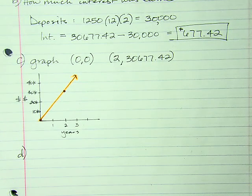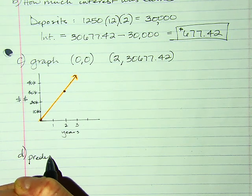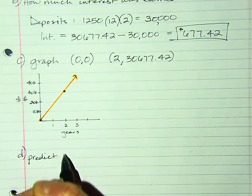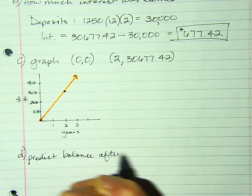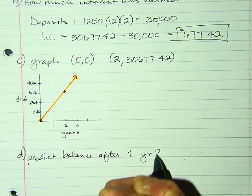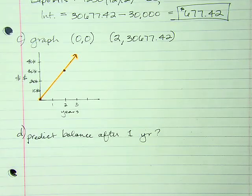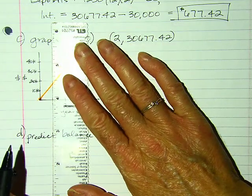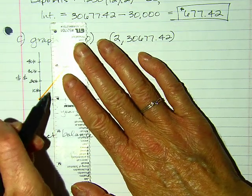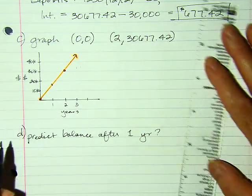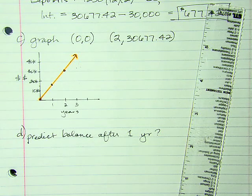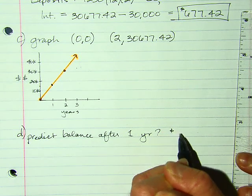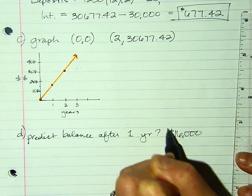Part D: predict the balance after one year. Looking at my graph, I'll line up my ruler at one year. Halfway in between would be $15,000. That looks a little bit over, so I'm estimating about $16,000.